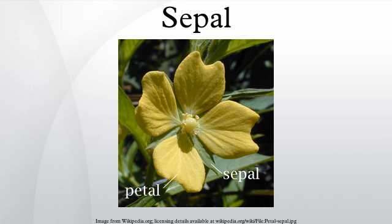Usually green, sepals typically function as protection for the flower in bud, and often as support for the petals when in bloom. After flowering, most plants have no more use for the calyx which withers or becomes vestigial. However, some plants retain a thorny calyx, either dried or live, as protection for the fruit or seeds.